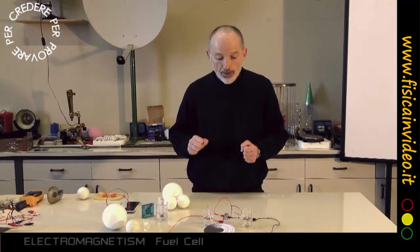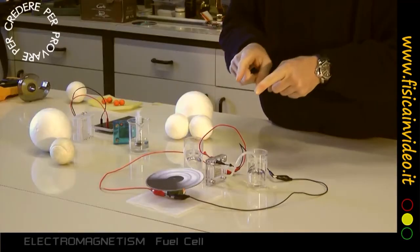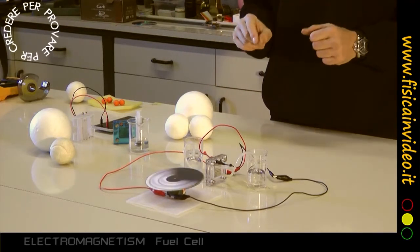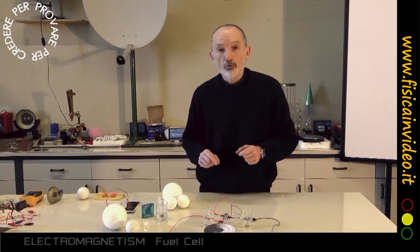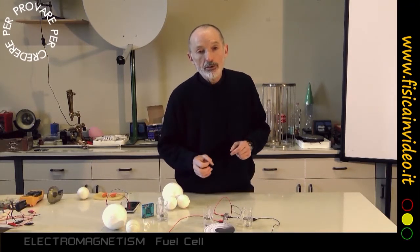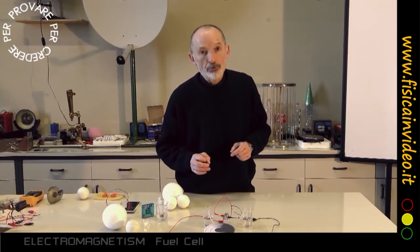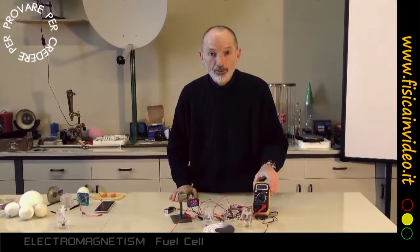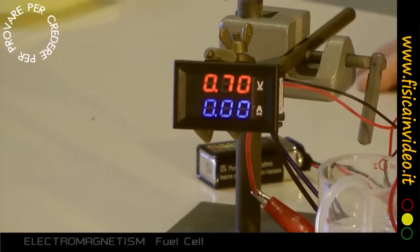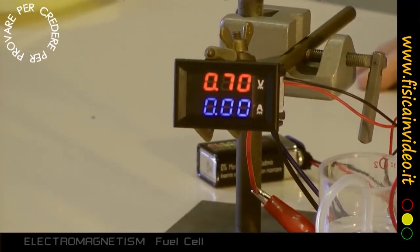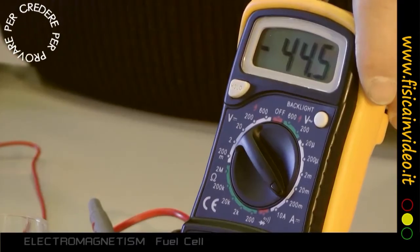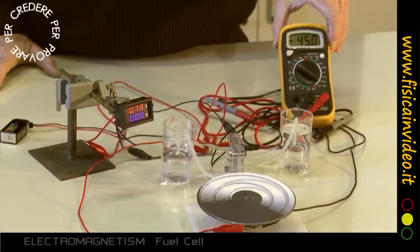At last, we can ask ourselves how much current is measured and how much voltage does the fuel cell produce. For this, we have to use a voltmeter and an ammeter. We can verify that the voltage is about 0.7 volts and the current intensity is about 45 to 50 milliamperes, up to about 150 milliamperes.